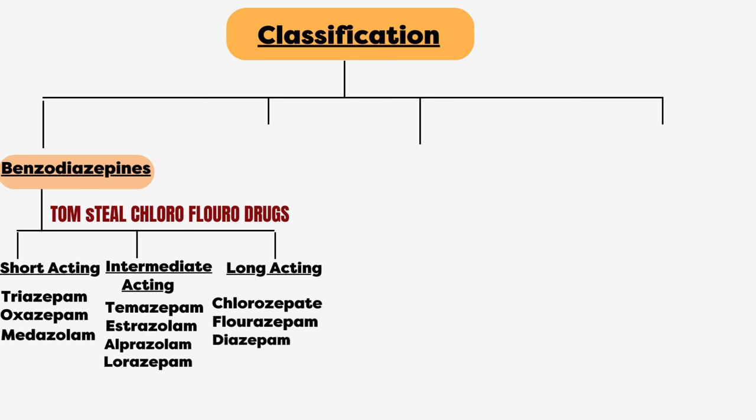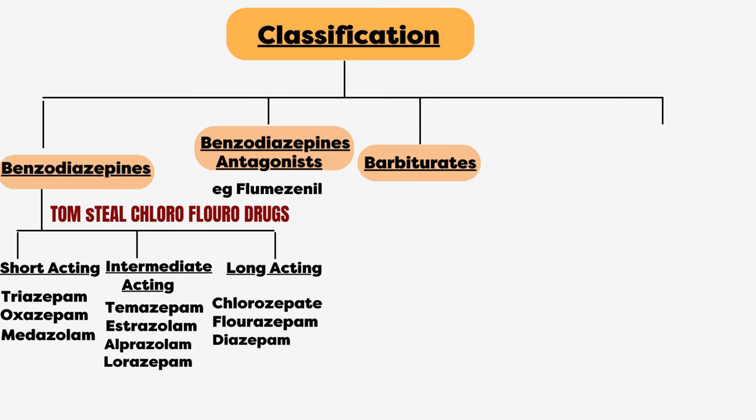Our next class of drugs is benzodiazepine antagonist, for example flumazenil. The third class of drug is barbiturates. Like benzodiazepines, barbiturates are also divided into short, intermediate, and long-acting barbiturates. The mnemonic here is TAP BP.